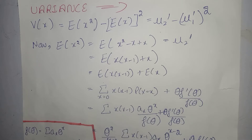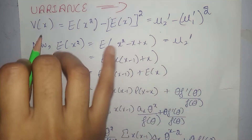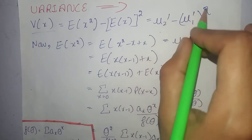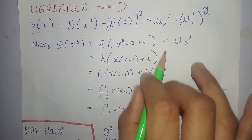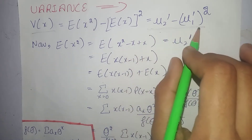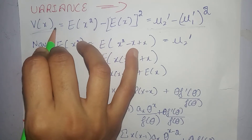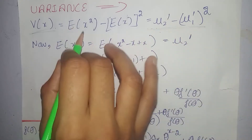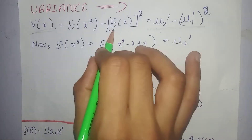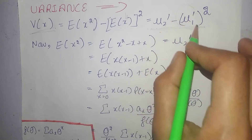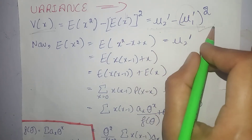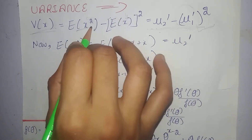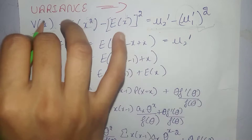Now let's find variance of power series distribution. Variance is denoted by V(X) and it is equal to mu2 dash minus mu1 dash square. That is, agar hamare paas moments about origin maalum hain, toh hum unse variance easily find out kar sakte hain. Now mu1 dash is equal to expectation of x raised to power 1, and mu2 dash is equal to expectation of x raised to power 2. Mu1 dash hum ne already find out kar liya — that is the mean. Hum ne just find out karna hai mu2 dash, that is expectation of x raised to power 2. Isko find out karke is formula mein put kar denge, maare paas variance aajayega.